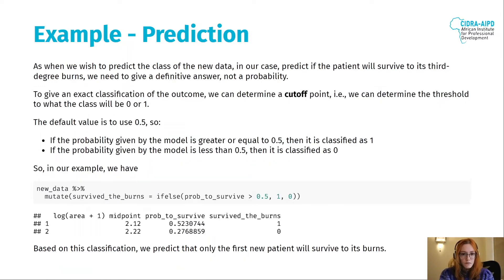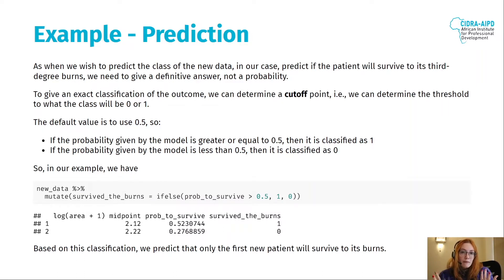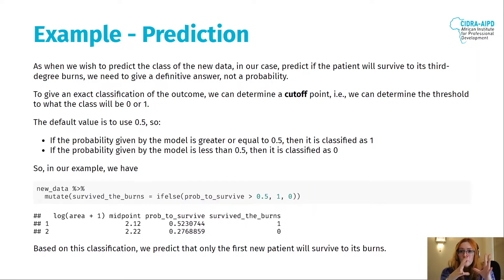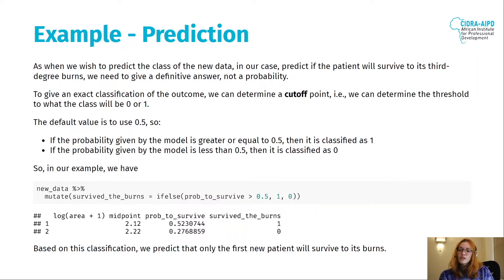Now that we have this probability, how do we determine if the person is going to survive or not? We had our function as survived by area — but how do we classify this probability? Because once you're using logistic regression, you usually want to classify an outcome, and just seeing the probability doesn't give you the classification. To classify something, we need to determine a cutoff point — a threshold.